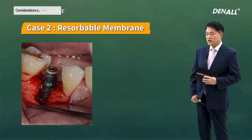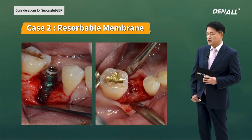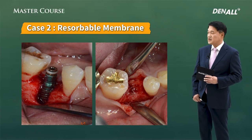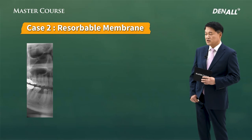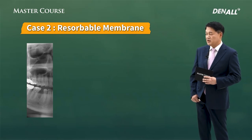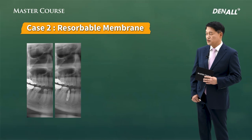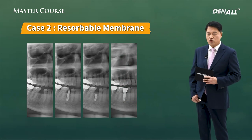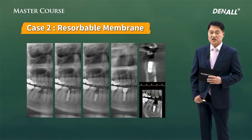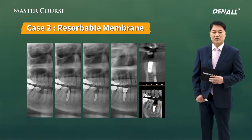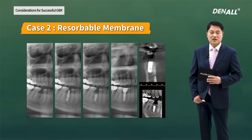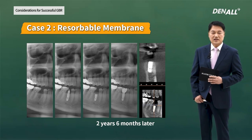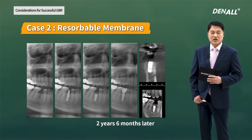This is before GBR. Appropriate GBR and membrane was done, and we got this result — a very favorable, very good prosthesis. X-ray image before surgery, after implant placement, after GBR, and after prosthesis delivery. CT image shows the buccal side bone defect has been well treated. Two years and six months later, we can see that it is well maintained.